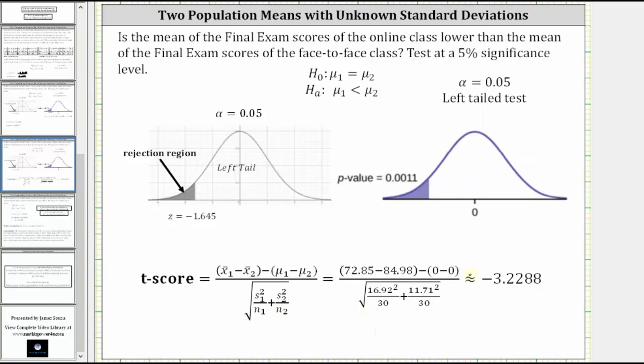Performing the calculations, notice we get a t-score that's slightly different than the t-score from the two-sample t-test, because I am using rounded values for the sample standard deviations. Either way, notice how the t-score of negative 3.2288 is in the rejection region. Therefore, we are going to reject the null hypothesis.